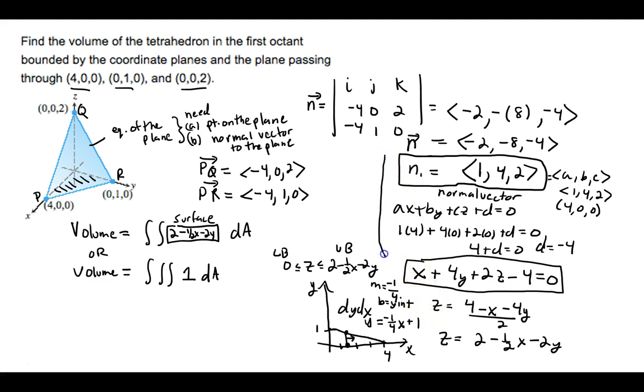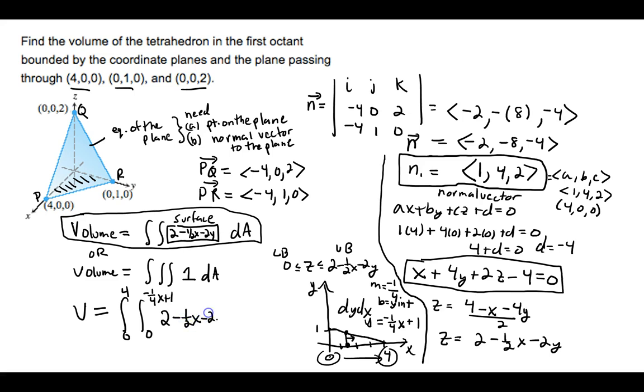Let me separate things so it's a little easier to follow. Our volume is equal to the integral of Y's going from 0 to negative 1 fourth X plus 1, and then X's going from 0 to 4. The integrand is the surface solved for Z, and it's a dy dx integral. Let's go to the next slide and actually calculate this.